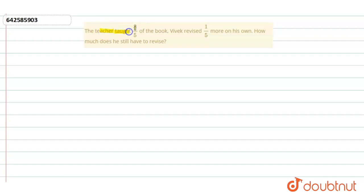The teacher touched three by five of the book, and Vivek revised one by five more on his own. How much does he still have to revise?